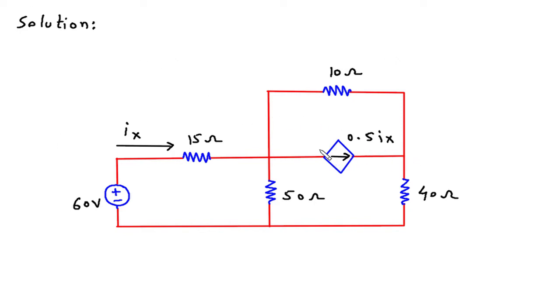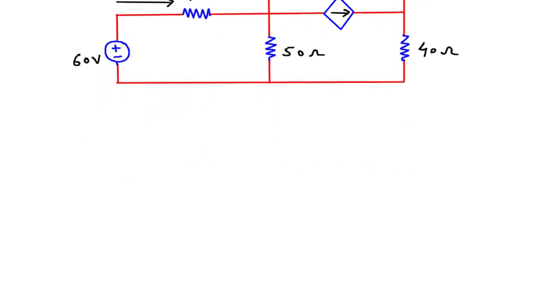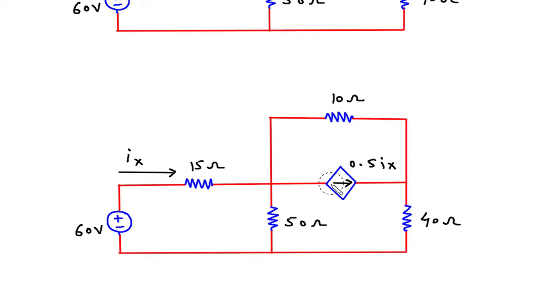Now we will convert this current source into its equivalent voltage source. This is a dependent current source, we will convert it into its dependent voltage source. Currently, it is in parallel with this 10 ohm. So its equivalent voltage source will be in series with this 10 ohm. This will be positive and this will be negative. Voltage is equal to current into resistance. Current is 0.5Ix into 10. So this will be 5Ix.